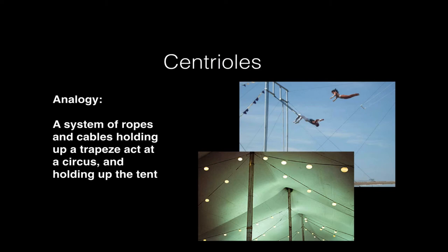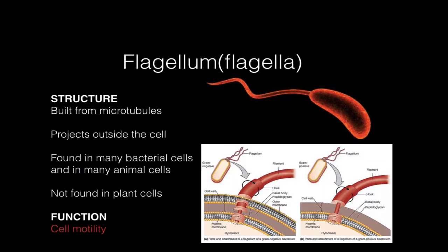Centrioles are a lot like a cabling system in a circus tent, either holding the tent up or allowing the people — like for example in a trapeze act — to move around. Now the flagellum is probably one of the most familiar parts of the cytoskeleton. If you look in this picture, you can see how the flagellum is attached by a section that penetrates through the cell membrane, and the main part of the flagellum sticks out into the environment. By twirling or shaking or moving or changing the shape of the flagellum, cells like sperm cells are able to swim or to be motile.